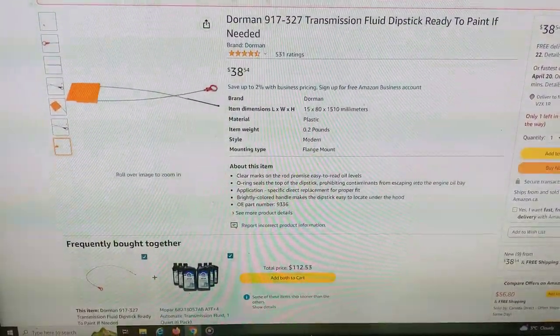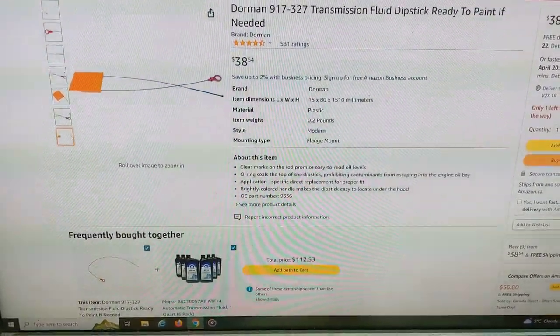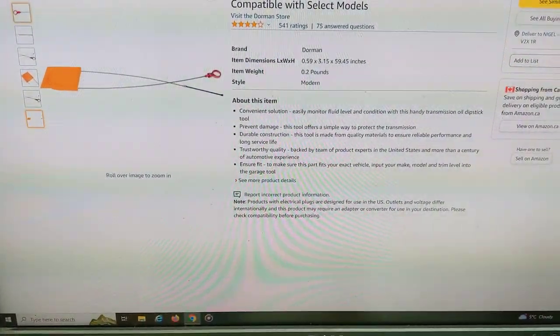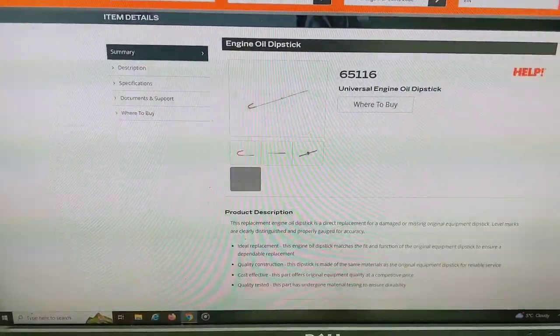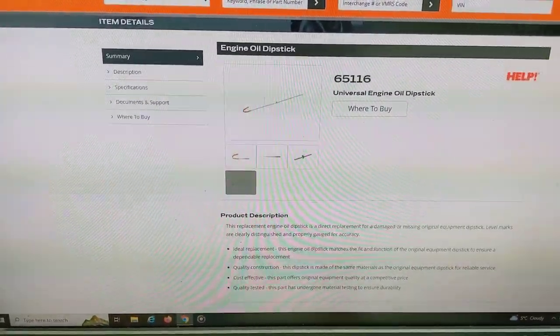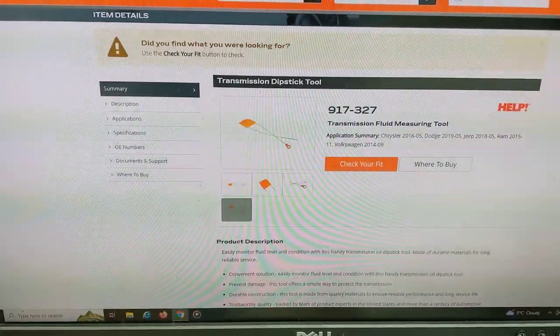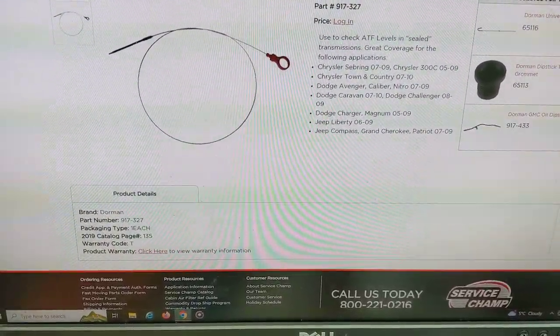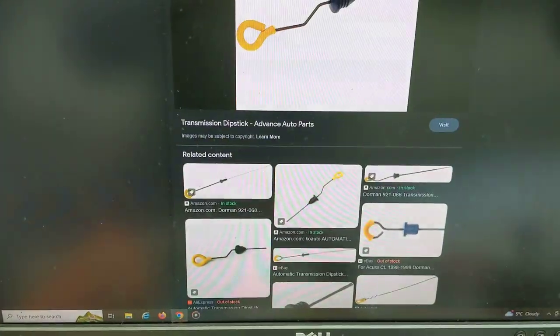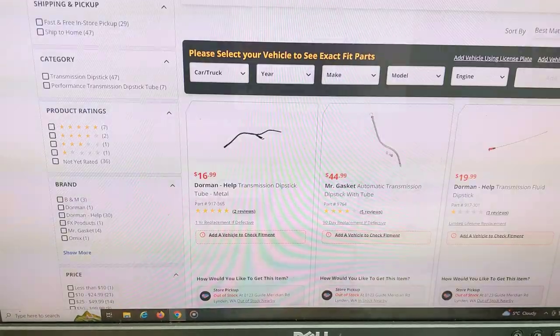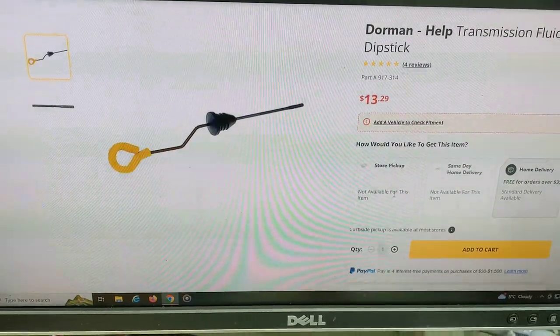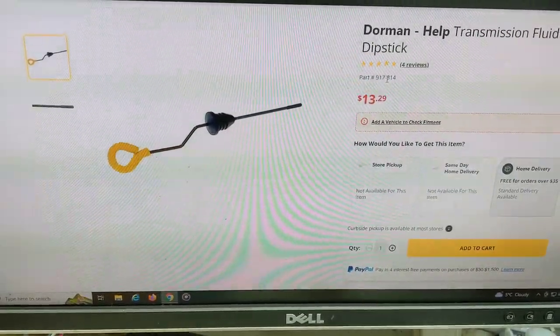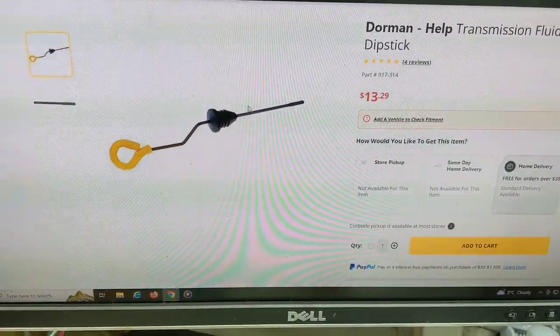This is the same 327 that I already discussed. Same part number. There's an engine dipstick - I don't think it's gonna be acceptable. This one I find interesting. So this one here is part number 917314. I do not know what the diameter of this is.